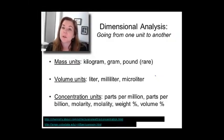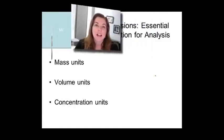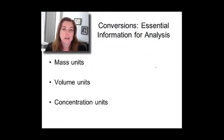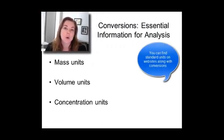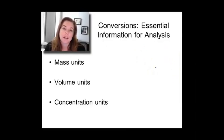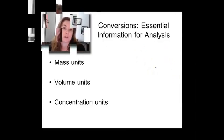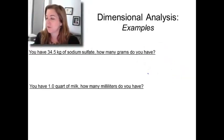So there's the basic idea in dimensional analysis. We put down the information we're given, multiply it by maybe one or several conversion factors using the fact that the conversion factors equal one and that units cancel. That way, we can go from kilograms to grams, liters to milliliters, or one of the many concentration units we're going to care about in this class. Conversions are really essential information for analysis. Let's do a couple of examples.